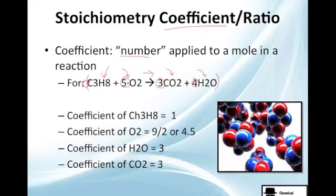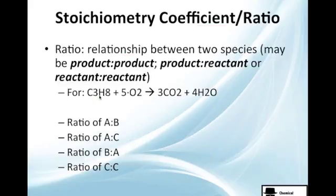Actually, you have 1 here, but it's not shown. So the coefficient of propane is 1, oxygen is 5, carbon dioxide is 3, and water is 4. Just take in mind that these stoichiometric coefficients are always in front or before the molecule in the equation, which is already balanced. Please make sure it's balanced.